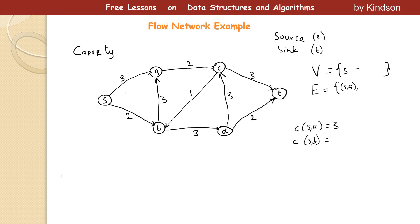One thing you need to know is that sometimes you may see two numbers on each edge. Take note of the expressions and notations used here. Also note that the total capacity coming out of the source must equal the total capacity going into the sink. We have 3 + 2 = 5 coming out of the source S, and the capacity of the two edges going into the sink T should also be 5.